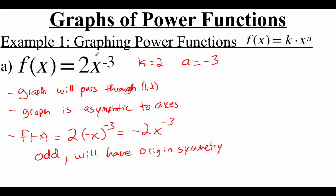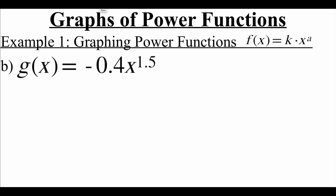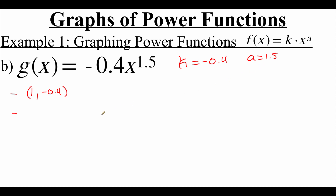We can graph this function on our calculator to confirm. Now here we've got a new function: g of x equals negative 0.4 x to the 1.5 power. So the k value is negative 0.4, and the a value is one and a half. First, our graph is always going to pass through the point one comma k, so our graph will contain the point one comma negative 0.4. And because we're dealing with a positive a value, our graph is also going to contain the point zero comma zero.